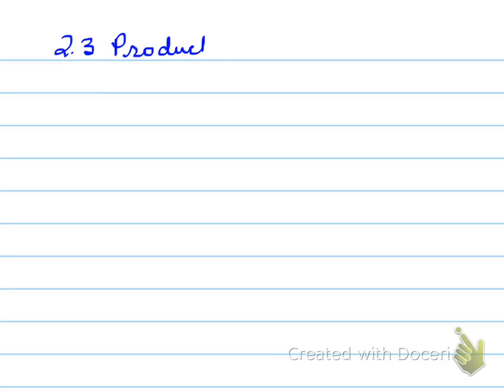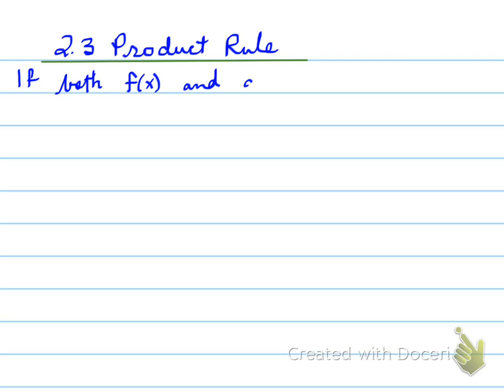Today we're looking at 2.3, the product rule. If we have, for example, two functions, let's say f of x and g of x, and we know that these two functions are differentiable — that means that each of these functions individually we can take the derivatives of.